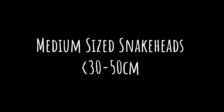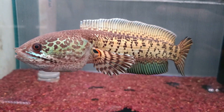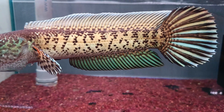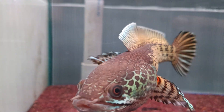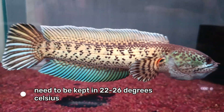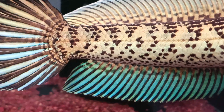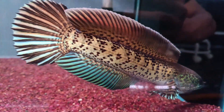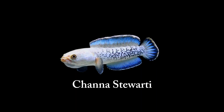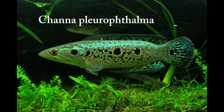Next we have the medium snakeheads. These grow no more than 45 to 50 centimeters, usually from 25 up to 50 centimeters long. They require larger tanks and experienced handlers. For example, chana aurantimaculata prefers colder water, so if you live in an area where temperatures remain at 30 degrees Celsius and above, it may not be a good choice. They also prefer tanks of a three-foot minimum up to four to five feet. Other examples include chana stewartii and chana pleurophthalma.